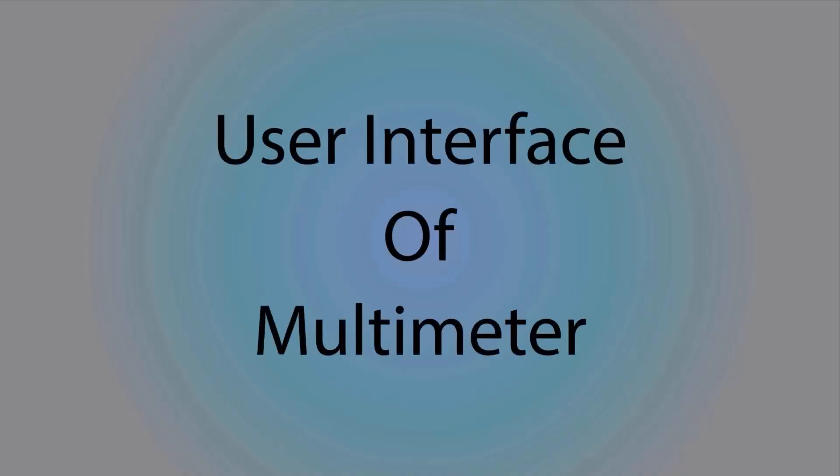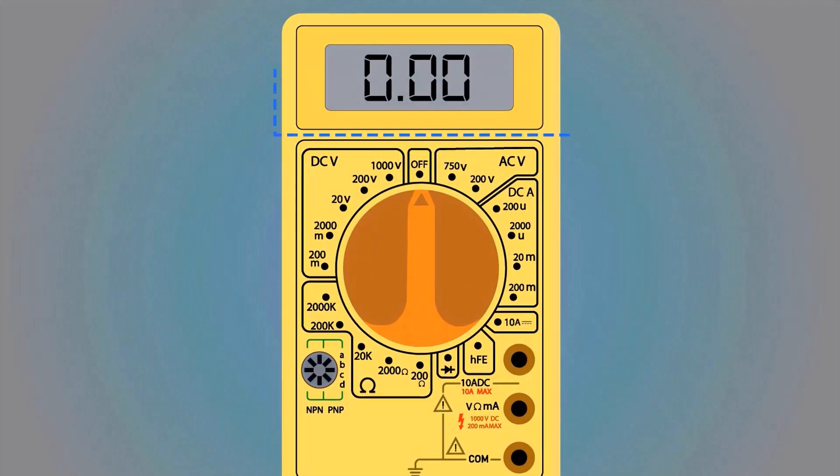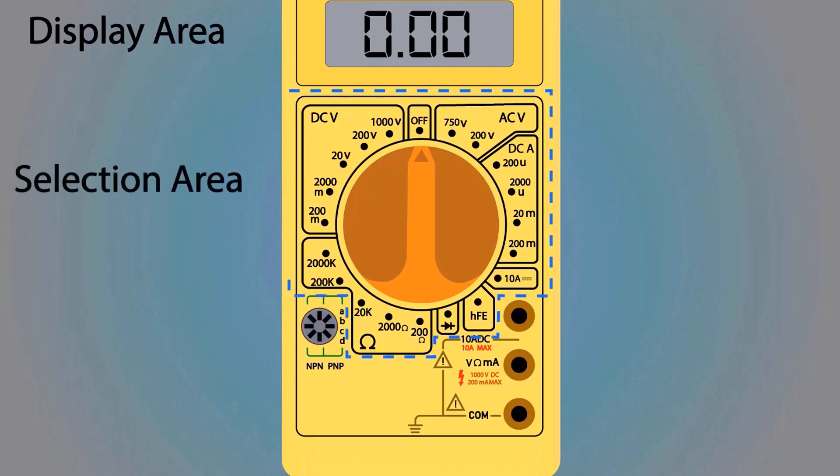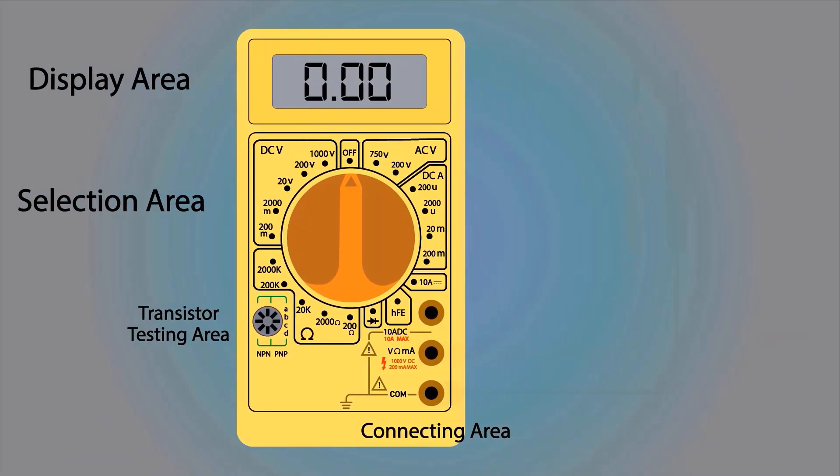Firstly, we will discuss the user interface of the multimeter. This is the display area. This is the selection area. This is the transistor testing area. This is the connecting area. These are the positive and negative probes.